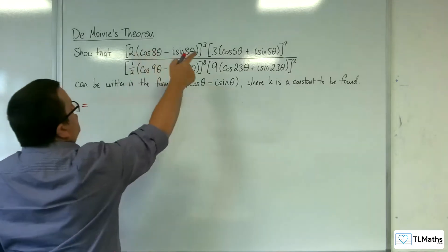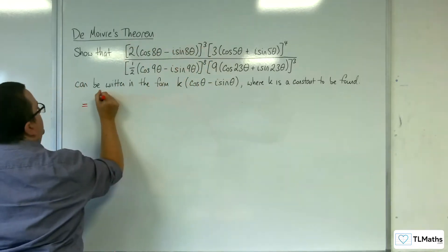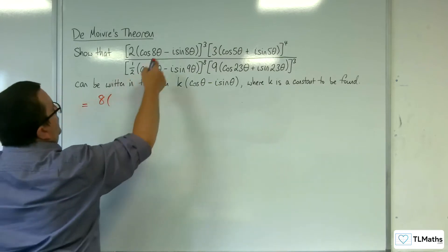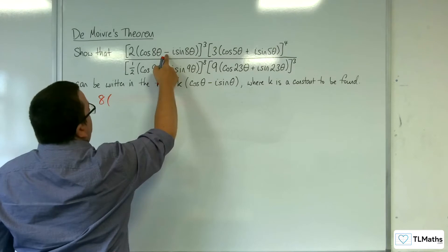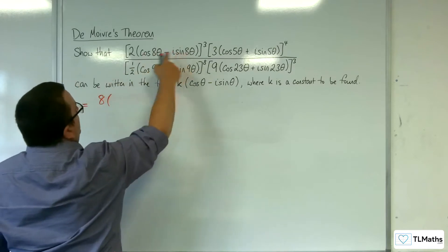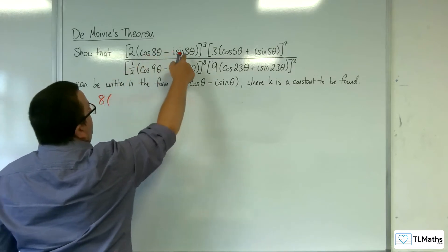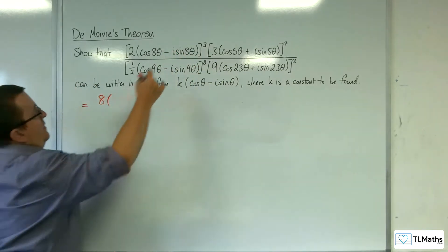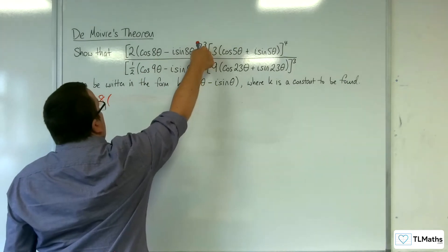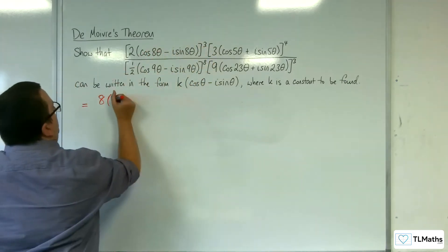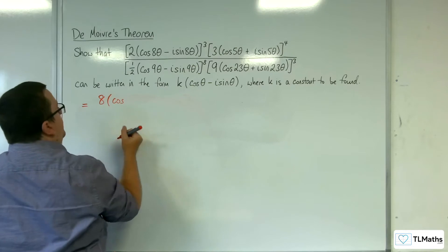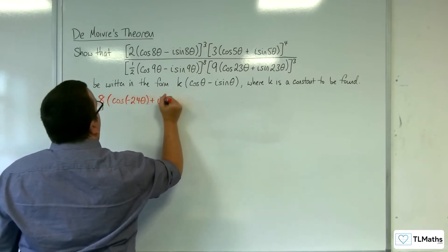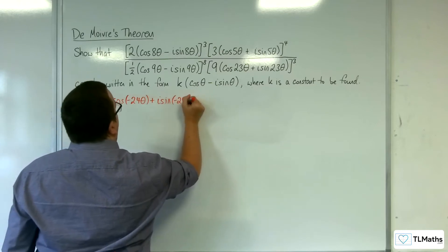So in the numerator, we've got 2 cubed, so that's 8. Because we've got the minus here, I'm going to rewrite the argument as cosine of minus 8 theta plus i sine of minus 8 theta. And then we've got it cubed, so the 3 is going to multiply with those, giving us cosine of minus 24 theta plus i sine of minus 24 theta.